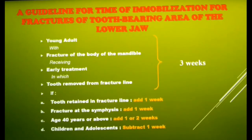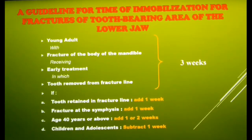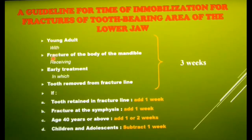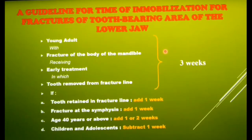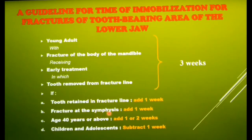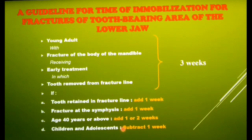The duration of intermaxillary fixation depends on various factors. As a guideline, the period of immobilization for a young adult with a fracture of the body of the mandible receiving early treatment where the tooth is removed from the fracture line is three weeks. Any deviation from this alters the IMF period — add one more week if the tooth is retained in the fracture line or if the fracture is at the symphysis. Add a week or more if the patient is over 40 years of age. In children, mobilize the fracture site in two weeks.